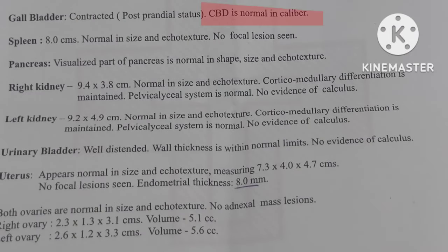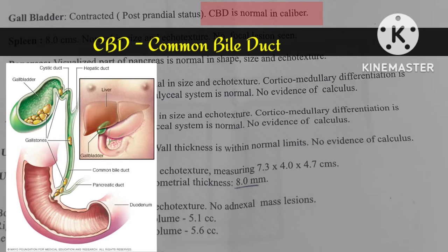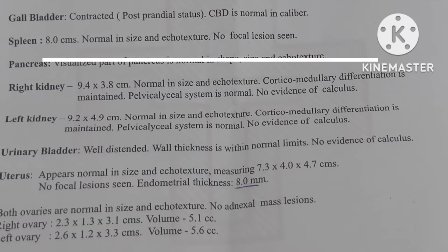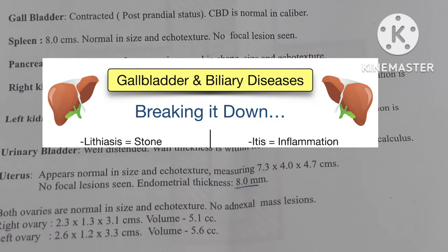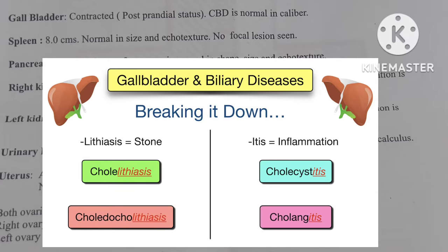Next is the CBD — common bile duct. If it is normal, they mention normal; if dilated, they write dilated. Regarding gallbladder terminology: cholelithiasis means stones in the gallbladder, while cholecystitis means inflammation of the gallbladder. 'Lithiasis' means stones and 'itis' means inflammation.